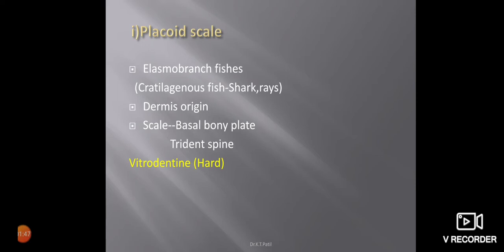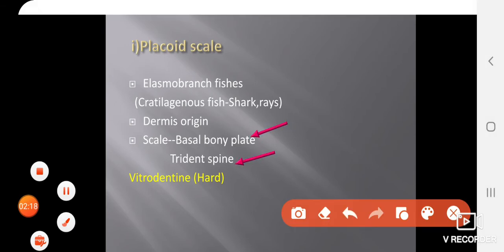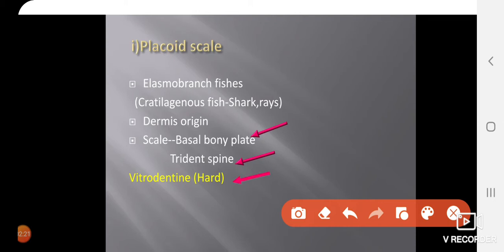Placoid scale is a characteristic of sharks. All sharks show the Placoid type of scale. It is a feature of Elasmobranchii fishes, which belong to class Chondrichthyes. This Placoid scale is dermal in origin. It is made by two structures: a basal rhomboidal plate and a trident spine. This Placoid scale closely resembles our teeth, so these are also known as dermal denticles.